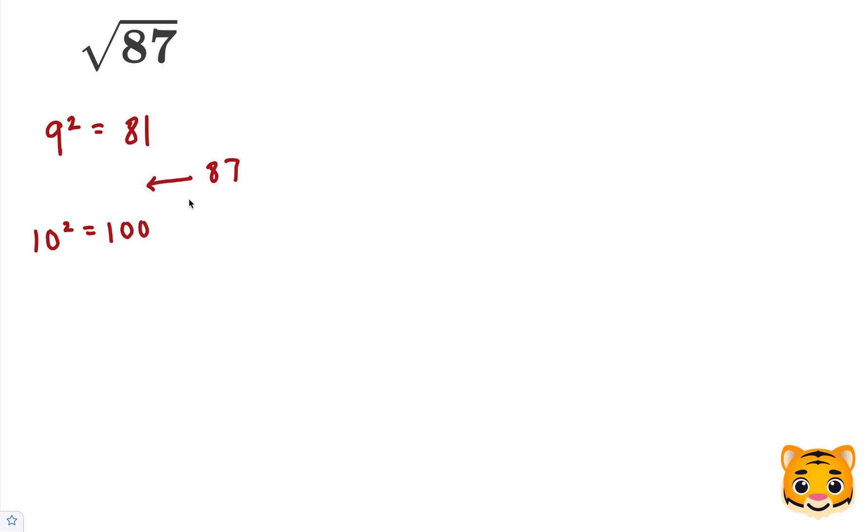We can see that 87 lies between 81 and 100. We can write the following inequality: 81 is less than 87 which is less than 100. Now we can take the square root of all of these values.